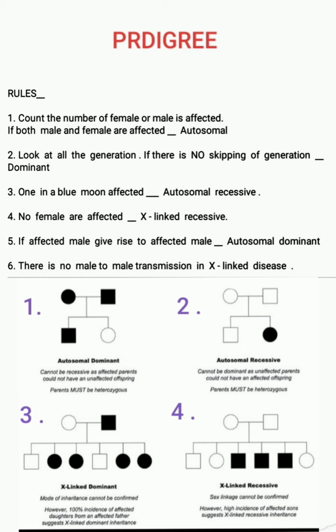Now let's look at examples. Image one is autosomal dominant because all generations are affected and both male and female are affected — so it is autosomal — and all generations from first to second are affected with no skipping, making it autosomal dominant. Image two shows one in a blue moon affected — only one person is affected — so it is autosomal recessive.